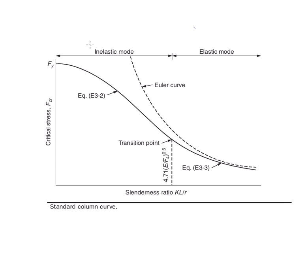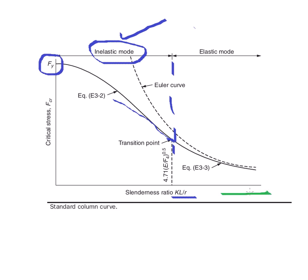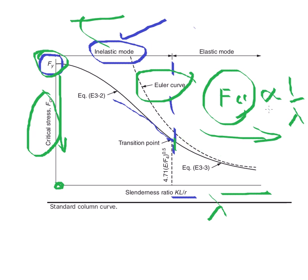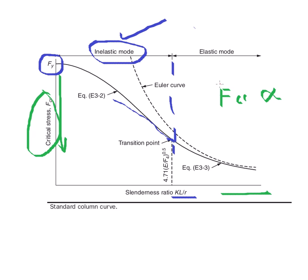The slenderness ratio limit of 4.71 times the square root of E/Fy is the transition point. Above this, the behavior is inelastic — the slenderness ratio is lower and approaching the yield value. If the slenderness ratio is more, the critical stress FCR reduces. FCR is inversely proportional to the slenderness ratio: if lambda is high, FCR is low; if lambda is low, FCR approaches Fy. The Euler curve is applicable only after this transition point.